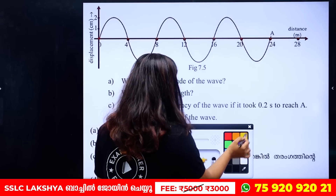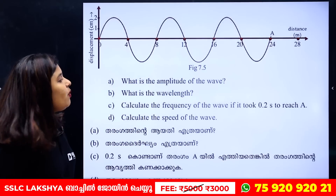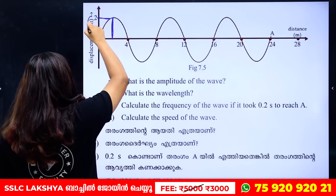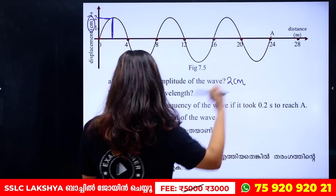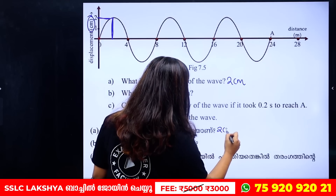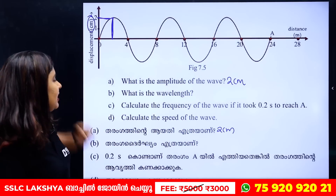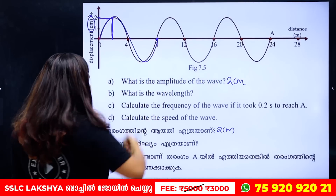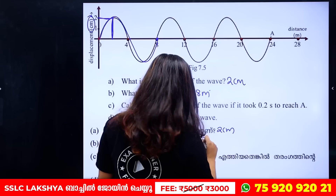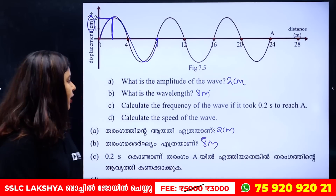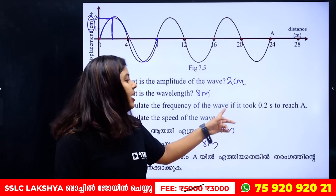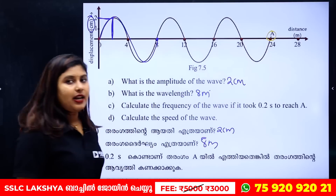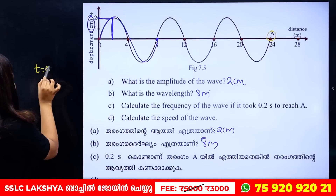What is the amplitude of the wave? The amplitude is 2 centimeters. What is the wavelength? The wavelength is 8 meters. And the time period is 0.2 seconds.